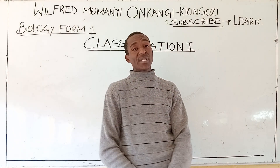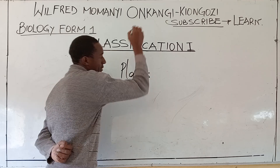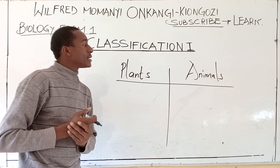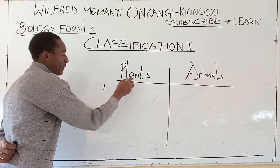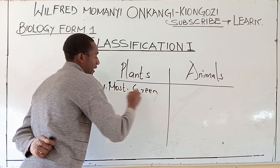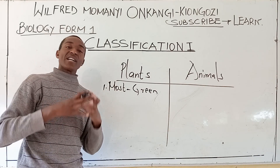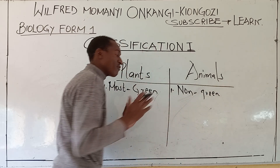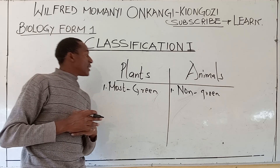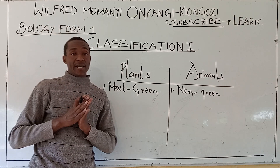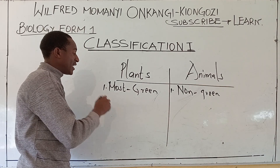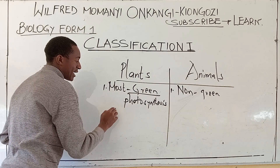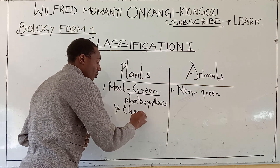We talked about the differences between plants and animals. We gave around five differences. The first one: most plants are green, which means they can manufacture their own food, while animals are non-green and cannot manufacture their own food — they depend on food manufactured by plants. Although we also have non-green plants, which depend on chemosynthesis, while green plants depend on photosynthesis.